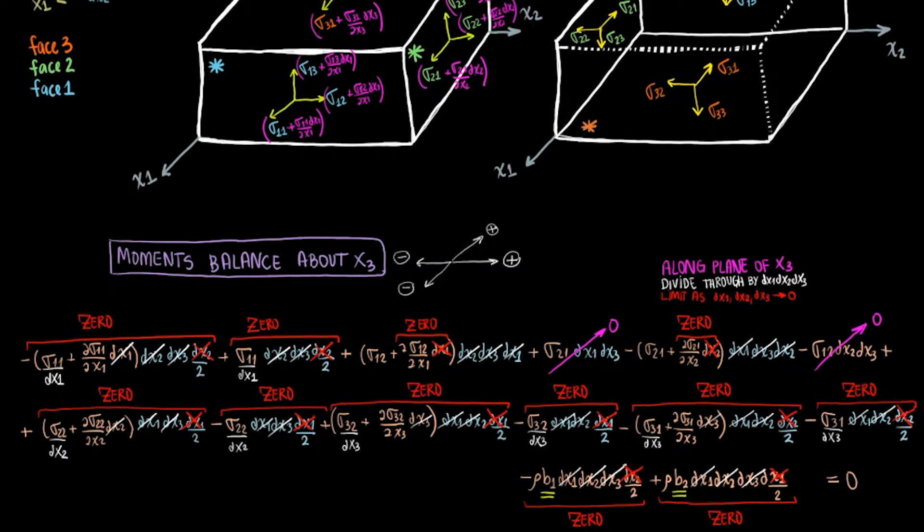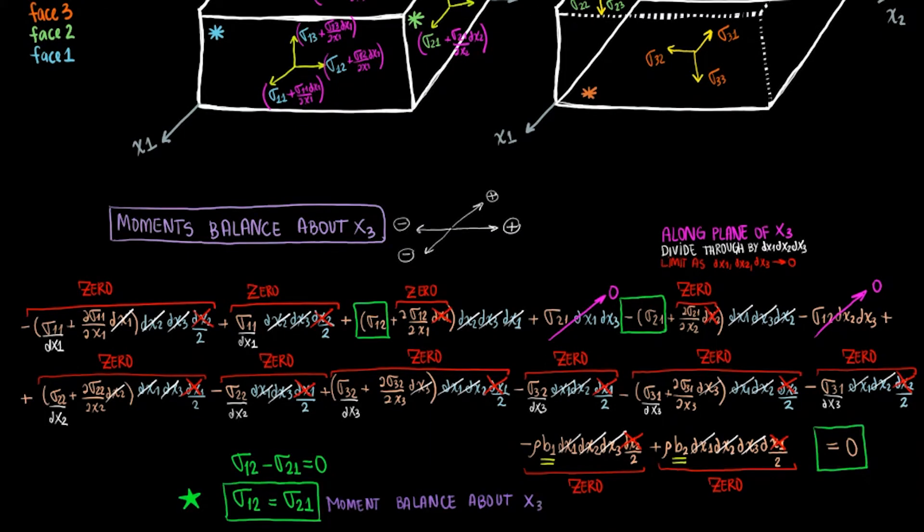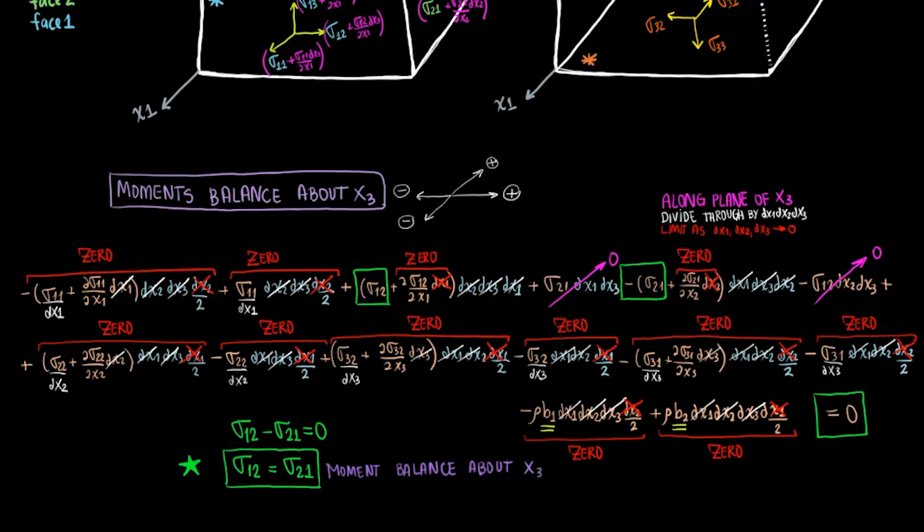You will notice that some terms are of order dx, such as the body forces, but others are not. As a result, the long expression simplifies to sigma 12 equals sigma 21.